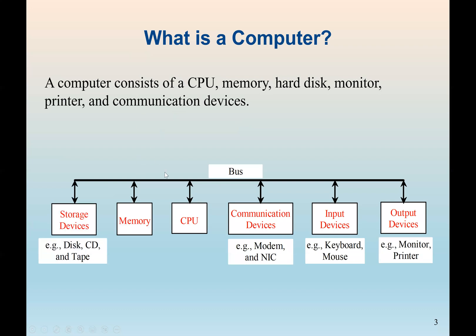So a computer is an electronic device that has a CPU, which is a central processing unit, and also has memory to store data, and also hard disk for permanent storage, and also monitor to display messages. Then again, it's a computer device.